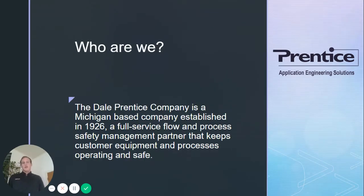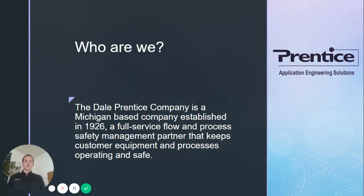The Dale Prentice Company is a Michigan-based process safety and automation firm that was founded in Detroit in 1926. We also own and operate an industrial valve service company called VRC Protex that has a footprint across the Midwest and Rocky Mountain.